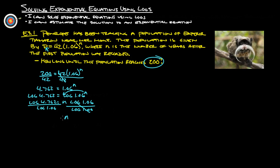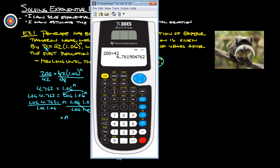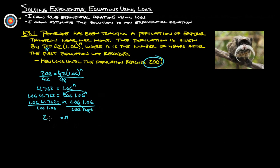And that will tell us what n has to be. So, we do log 4.762 equals divide by log 1.06 and we get 26.8. So 26.8 years later, it should end up being about 200 for the population.